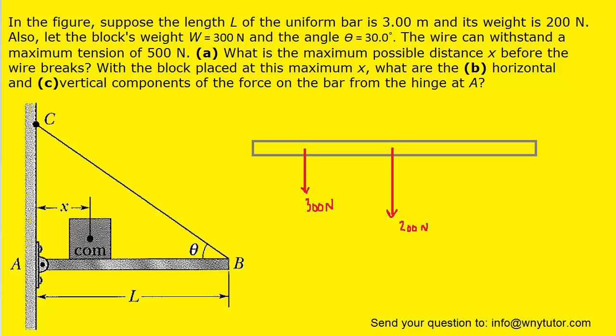We also know that there is a tension force that's pulling up on the bar at the point labeled B, so we can draw a third force in this fashion. We'll label it 500 newtons because the question told us that the maximum tension in the wire will be 500. In addition, we were told that the angle between the wire and the bar was 30 degrees, so we can label that angle as 30 degrees.